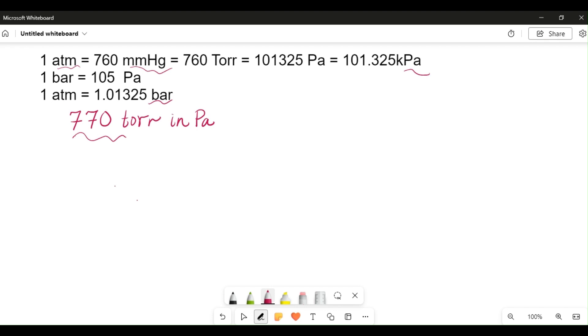So you have 770 Torr times a fraction. You have to have your Torr at the bottom and your Pascals up top.